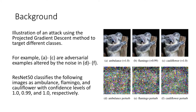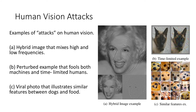We know that convolutional deep learning models are susceptible to adversarial attack using imperceptible pixel perturbations. While human vision can be attacked, it is only successful by perturbations that are at a much larger scale. We are investigating the mechanisms that give biology this inherent immunity.